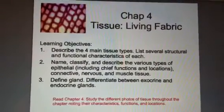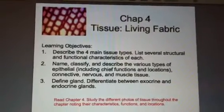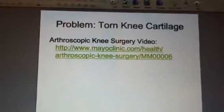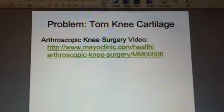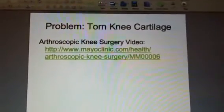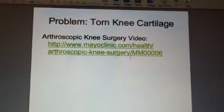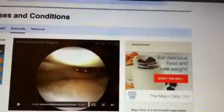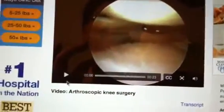We have three learning objectives with this chapter, and you can see those on your notes as well. We're opening this chapter with a problem — since we're talking about tissues, our problem is torn knee cartilage. Maybe some of you have had knee injuries involving torn knee cartilage. We'll go ahead and run the video now.